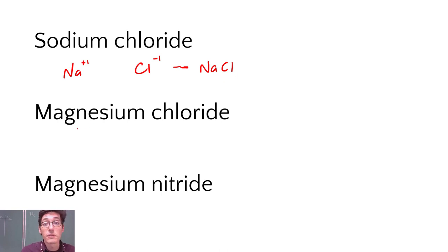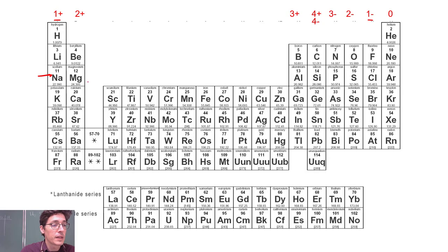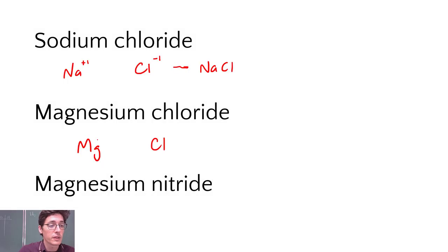Now it gets a little bit trickier when we have different charges. Magnesium chloride. Magnesium is Mg, chlorine is still Cl. If we go back to our periodic table, magnesium is right next to sodium. It is number 12 on the periodic table right here. In column number two it has a charge or an oxidation number of two plus. Chlorine is still a negative one. So now let's look at how we cancel this out.